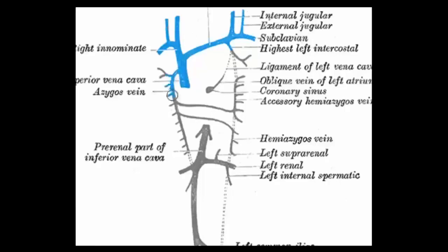This is the azygous vein, taking in the subcostal veins, and that's joined by a connecting branch from the hemiazygous on the other side. Here's the hemiazygous connecting across, taking in the subcostal veins on the other side, coming across, joining the azygous and draining into the superior vena cava.